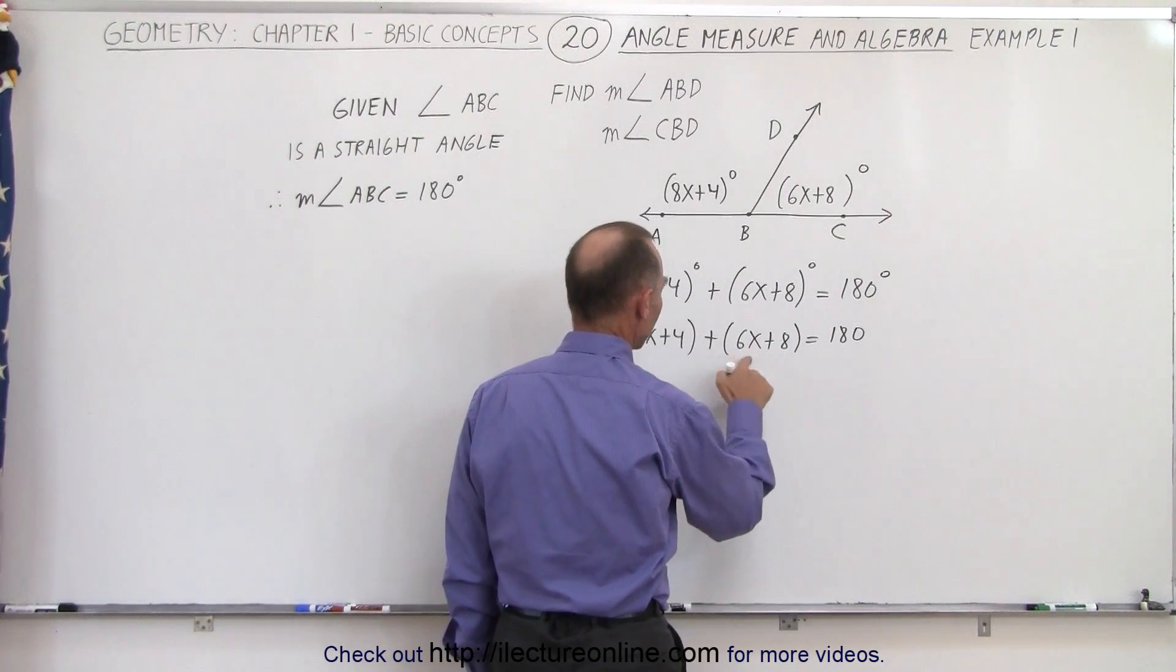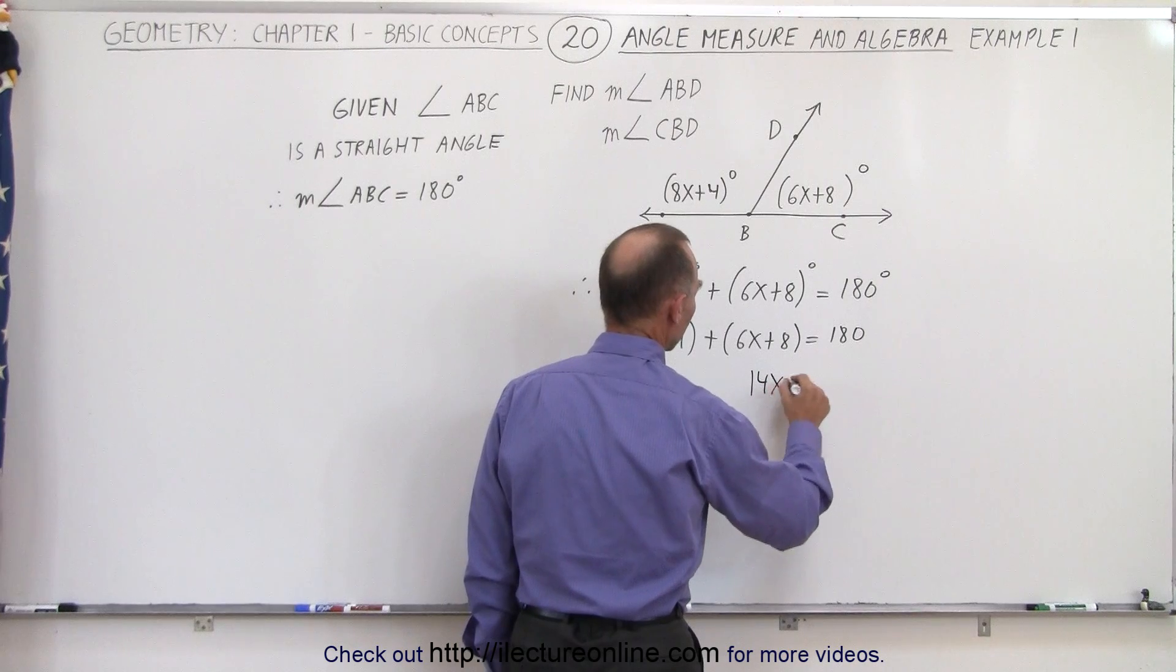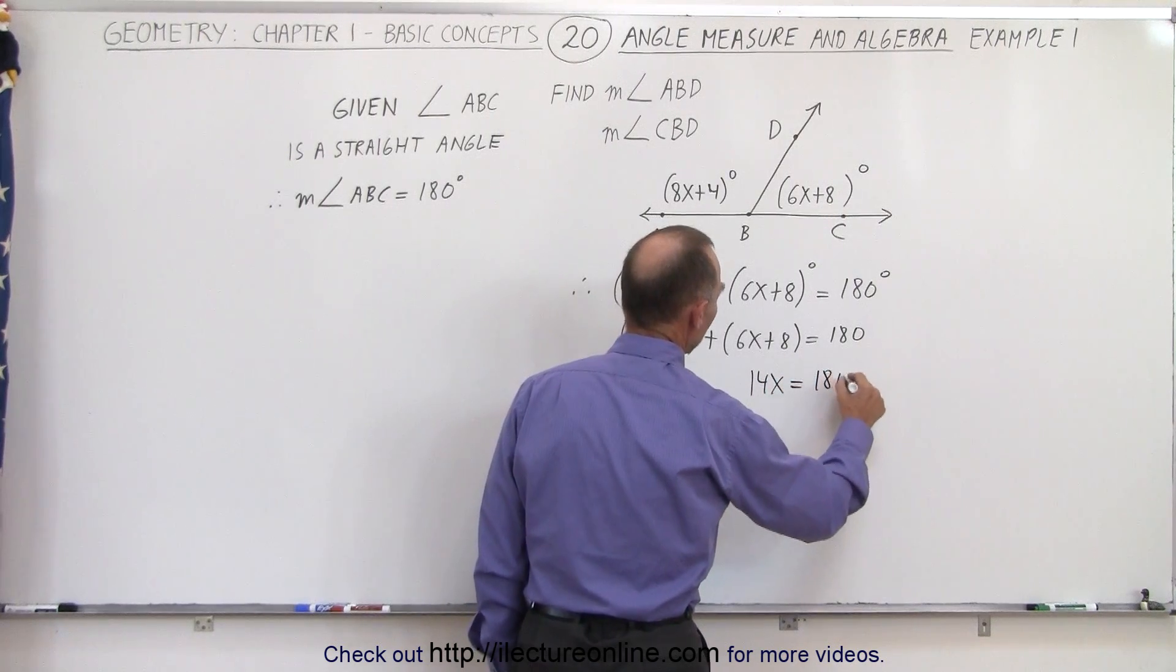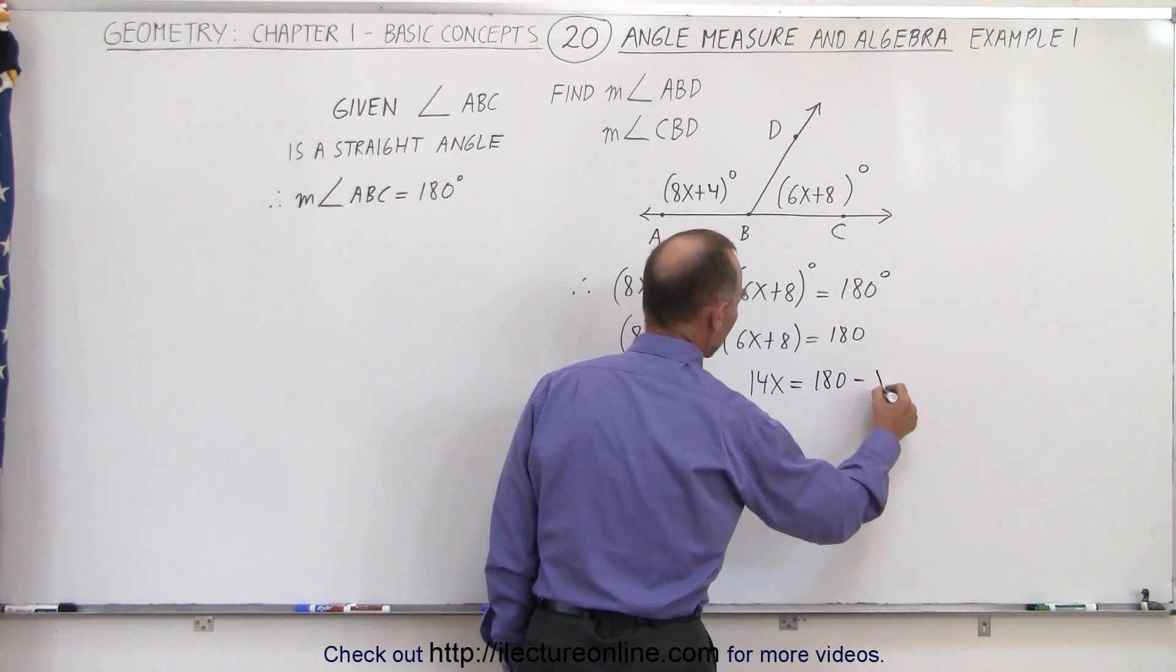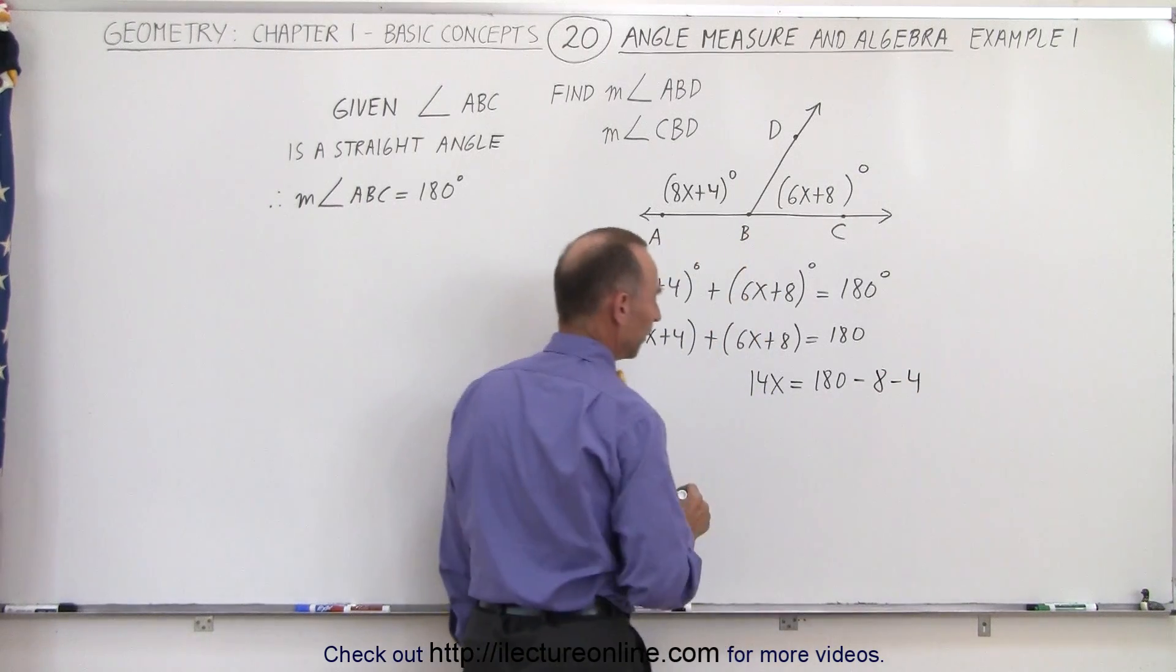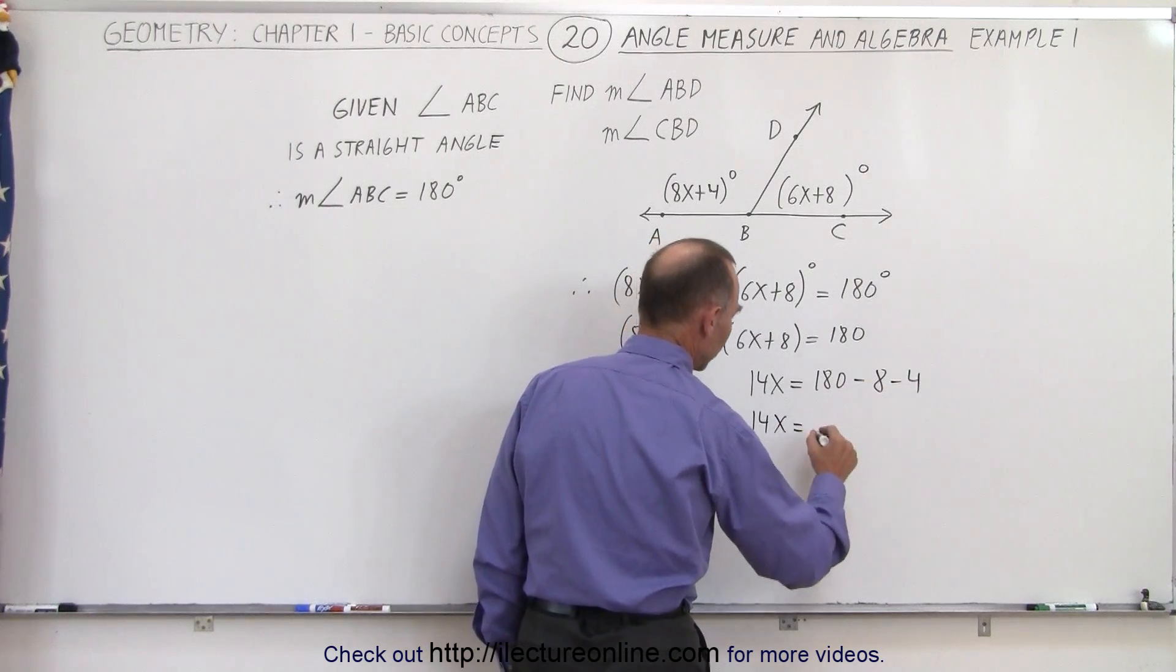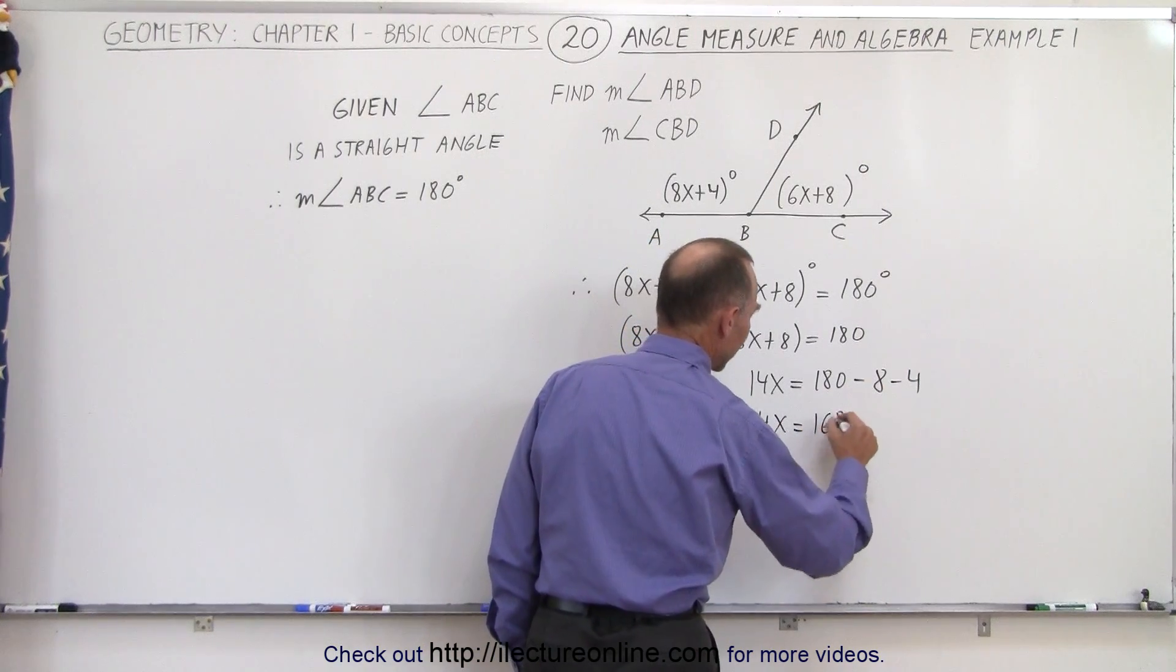On the left side we have 8x plus 6x, that's 14x. On the right side we have 180 minus 8 and minus 4. That means that 14x is equal to 180 minus 12 or 168.